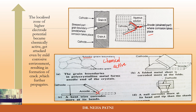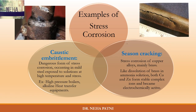Similarly, if it's a bent wire, it will corrode more at the bent area — that is where the stress has occurred. You might have observed that a nail corrodes more at its head and tip than at the shank. The shank is always less corroded compared to the head and tip because those areas are under stress. That type is basically stress corrosion.